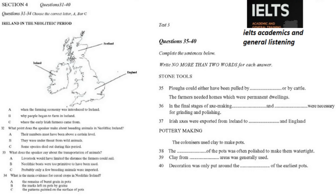Two main cereal crops were introduced to Ireland during this time — wheat and barley, both in several varieties. The main evidence for their presence consists of impressions on pottery, where a cereal grain accidentally became embedded in the surface of a pot before it was fired. The grain itself was destroyed by the firing, but it left an impression on the pot which could be studied and identified by botanists.